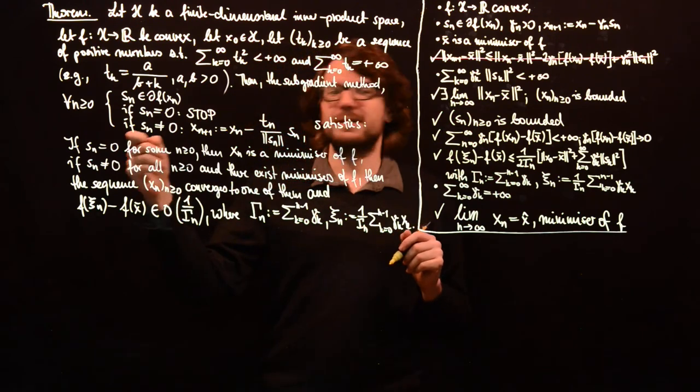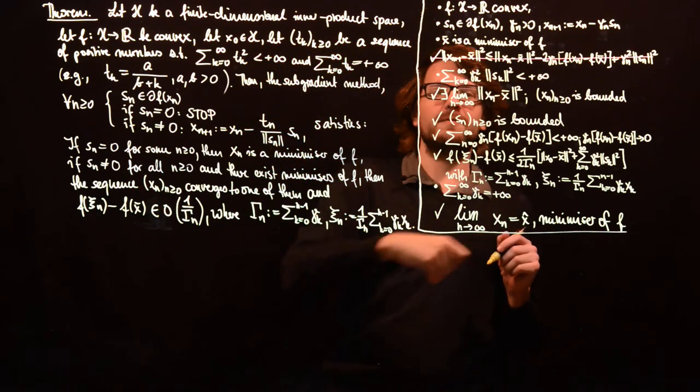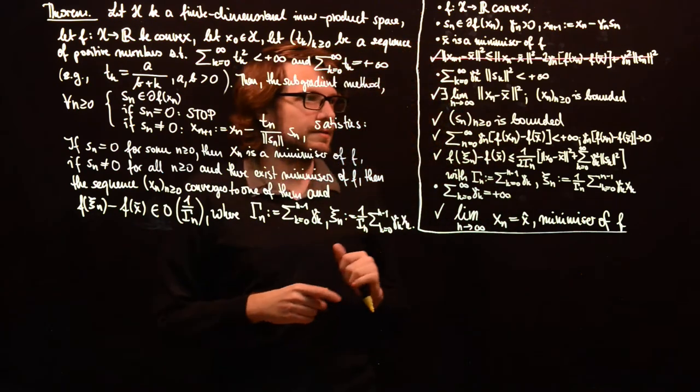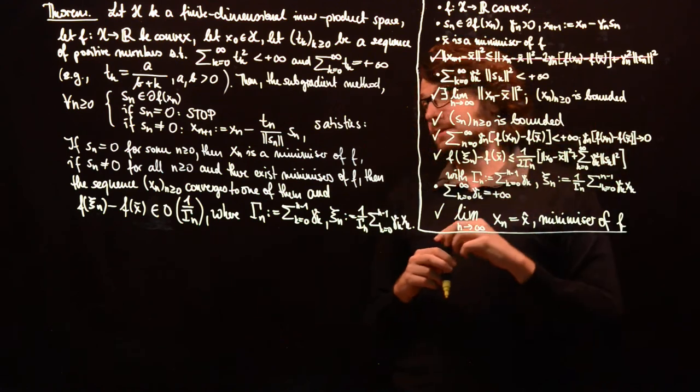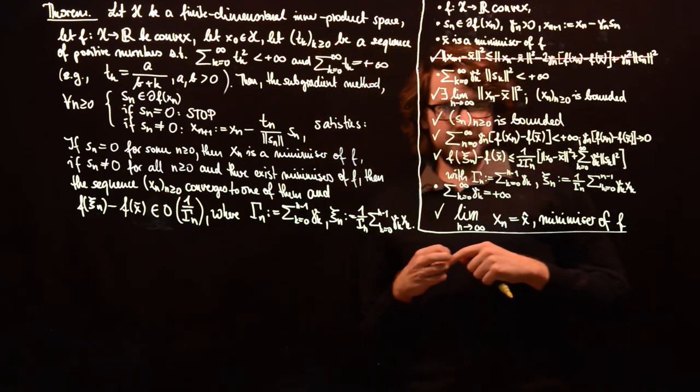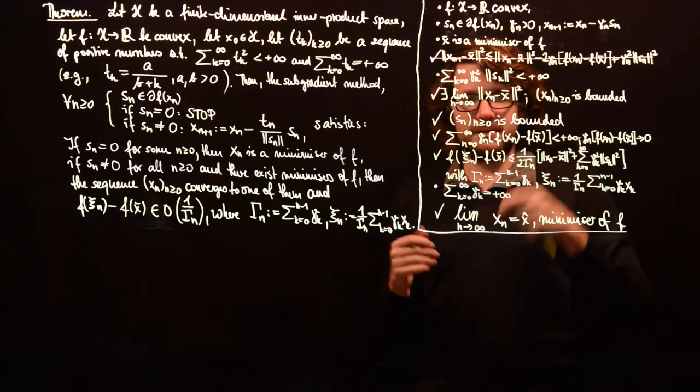Then we have that the limit of x_n to any minimizer exists. Of course, if the limit of x_n exists, then this limit also exists. That is clear, x_n is bounded. This is true for all convergent sequences. The sequence of subgradients is bounded.